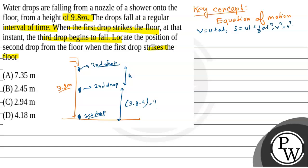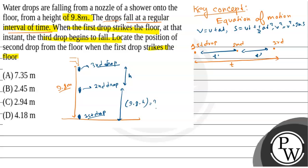The kinematic equation is: v² = u² + 2as, where v is final velocity, u is initial velocity, and a is acceleration. Since the drops fall at a regular interval of time, let's say this is our first drop, this is the second drop, and this is the third drop. The time interval between first and second is t_dash, and between second and third is also t_dash. So the total time T between first and third drop is T = 2·t_dash, therefore t_dash = T/2.